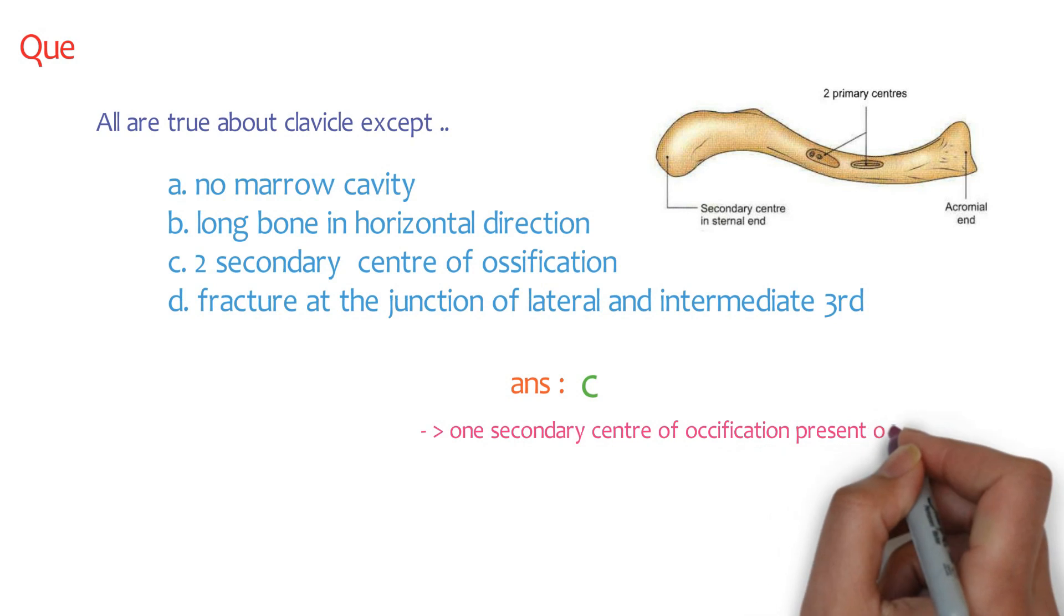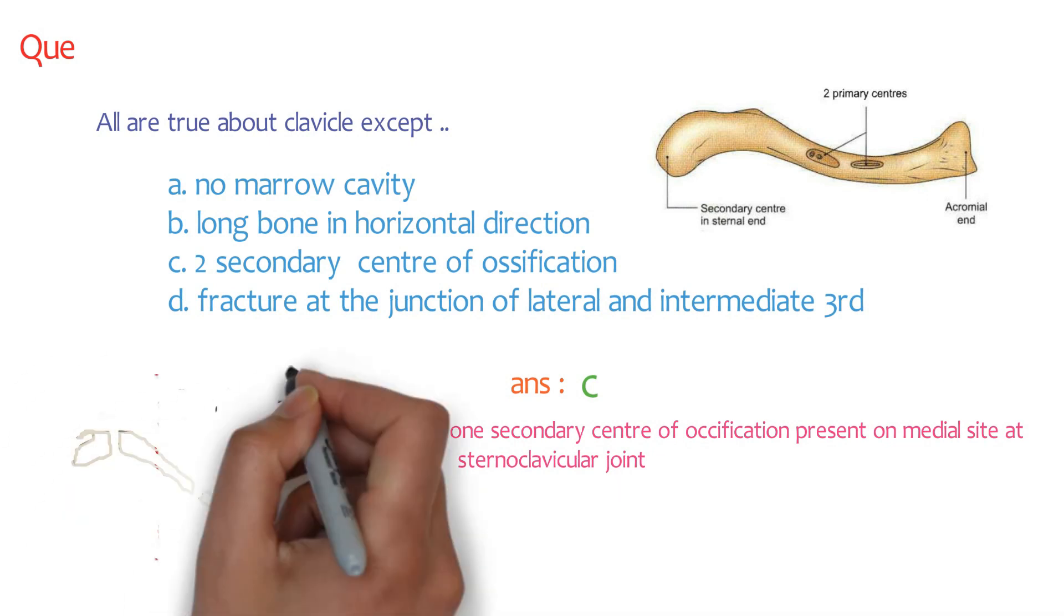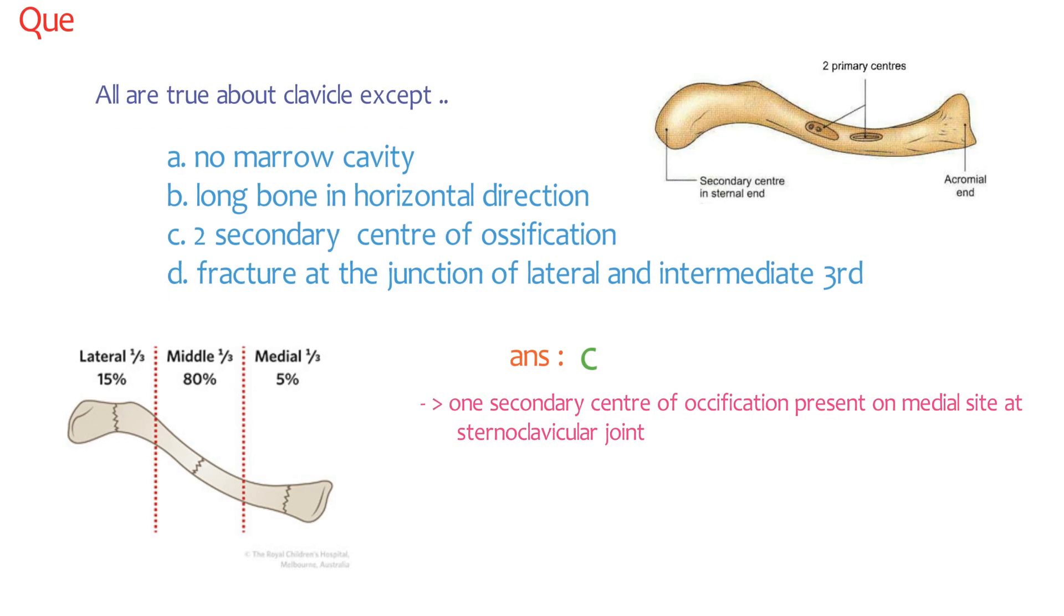What about option four? Fracture at the junction of lateral and intermediate third. So it is the right answer because the fracture of the clavicle can be classified by its anatomical location, which is lateral one-third, middle one-third, and medial one-third. And the most common site is the middle one-third.